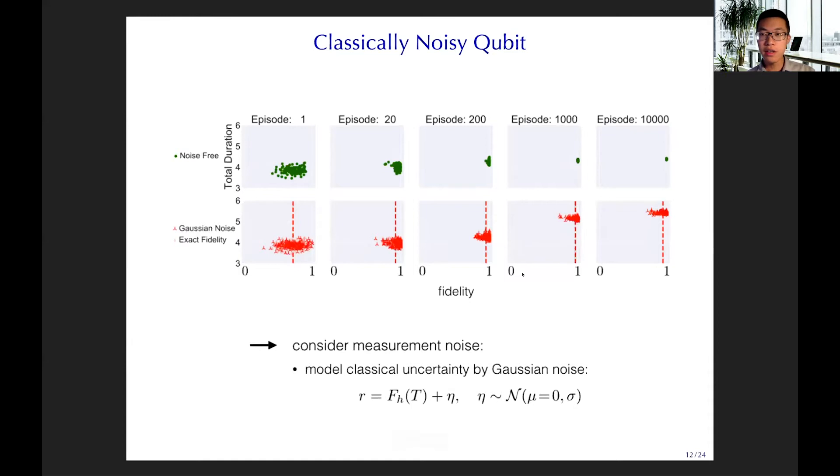The second is the classical noise setting. In this setting, we add a Gaussian noise to our fidelity. The agent accesses only the noisy fidelity. And here we plot the exact fidelity only for reference purpose. And you can see also with the training going on, the agent is going to find a good policy to improve the fidelity.